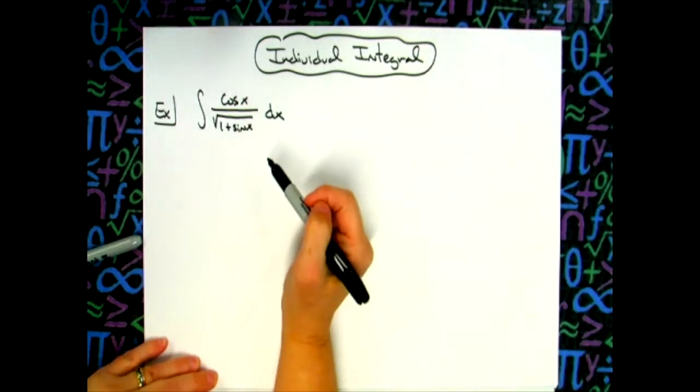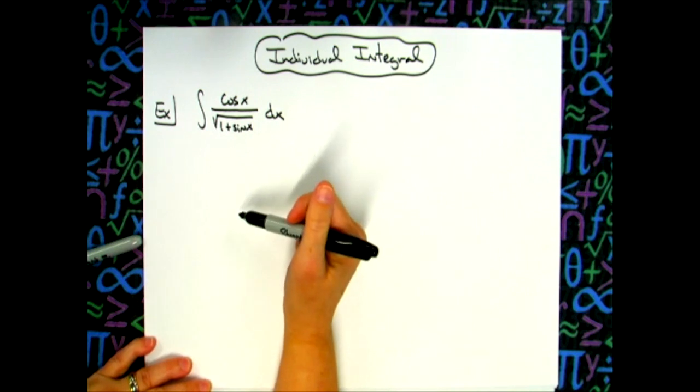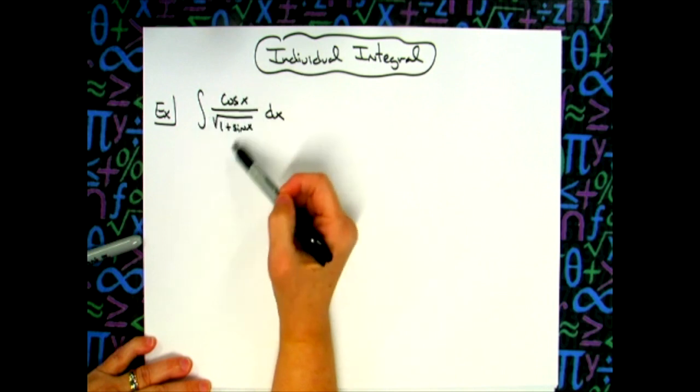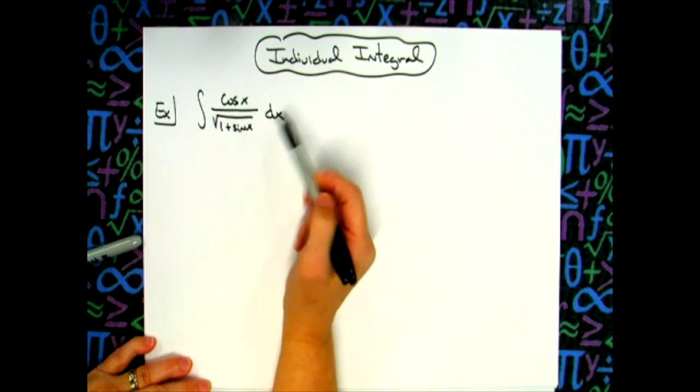All right, in this video we're going to do a straightforward u-substitution integral like would be found in a standard Calc 1 class. We're going to integrate cosine x over the square root of 1 plus sine x.